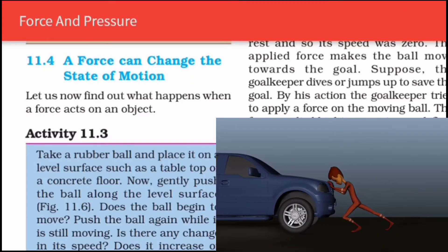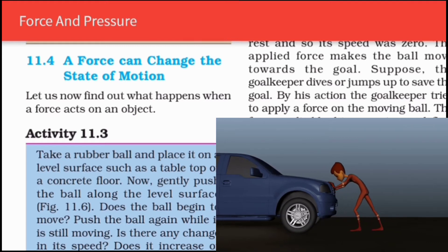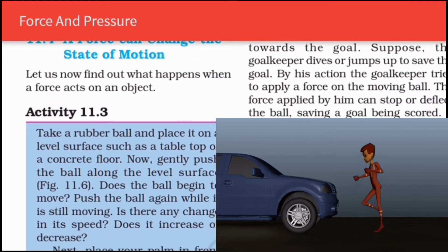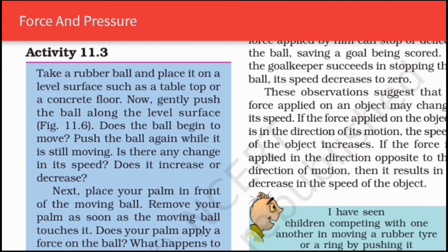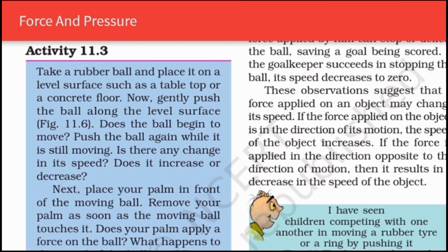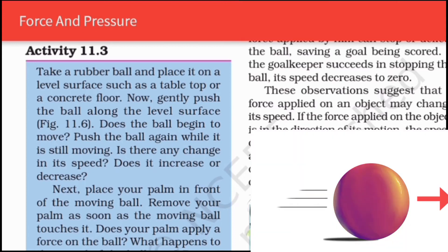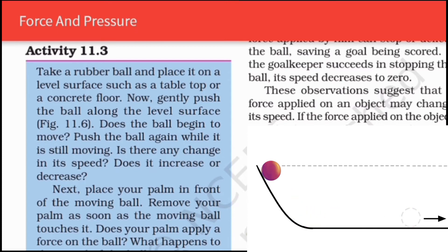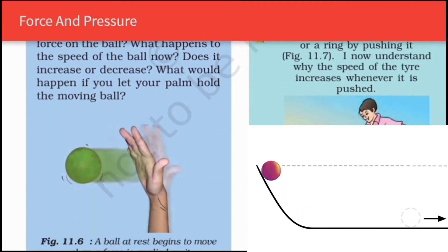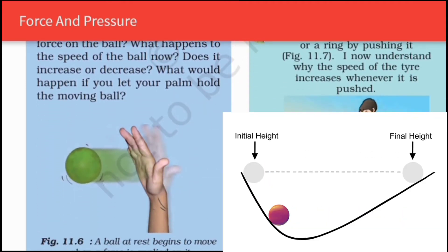A force can change the state of motion. Let us find out what happens when a force acts on an object with the help of Activity 11.3. Take a rubber ball and place it on a level surface such as a tabletop or a concrete floor. Now gently push the ball along the level surface — from a stationary condition it will come into motion, because before the push the ball is at rest.